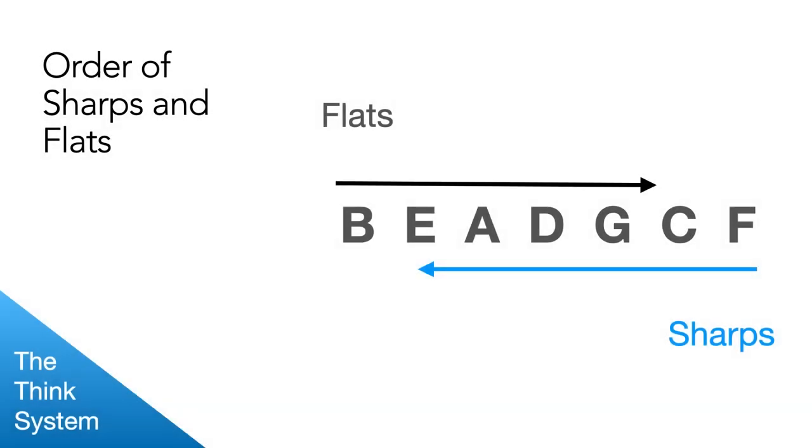So the first thing to understand is that flats and sharps appear in a very specific order. This chart shows you the order of the flats, and the order of the sharps is exactly the opposite. All this means is if you have one flat in a key signature, that flat is B flat. If you have two, it's B flat and then E flat. If you have three, it's B flat, E flat, A flat, on through all of the flats.